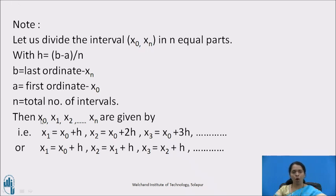The ordinates formed with this division will be x naught, x1, x2, x3, x4 and so on up to x_n, and they are given by x1 equals x naught plus h, x2 equals x naught plus 2h, x3 equals x naught plus 3h and so on. In other words, x1 equals x naught plus h, x2 equals x1 plus h, x3 equals x2 plus h, and so on, x_n equals x_(n-1) plus h.